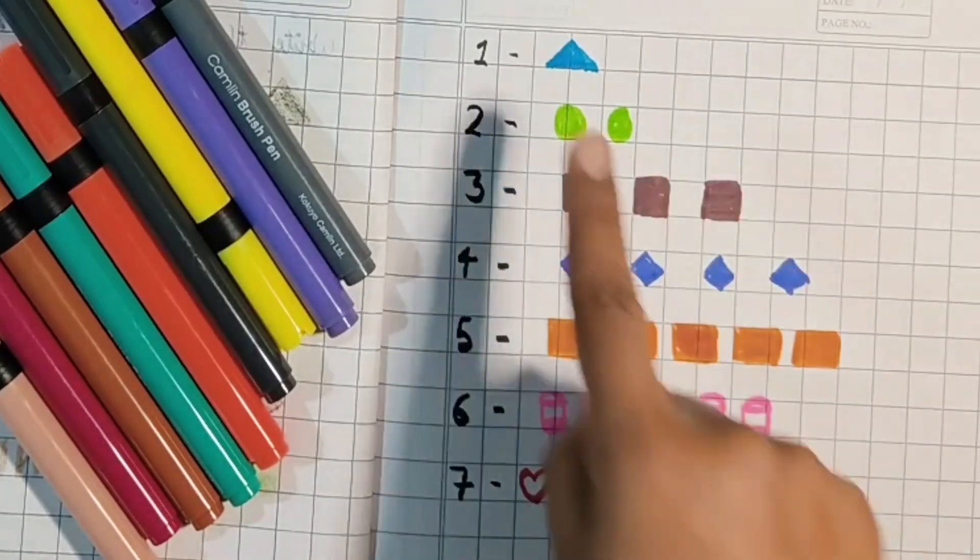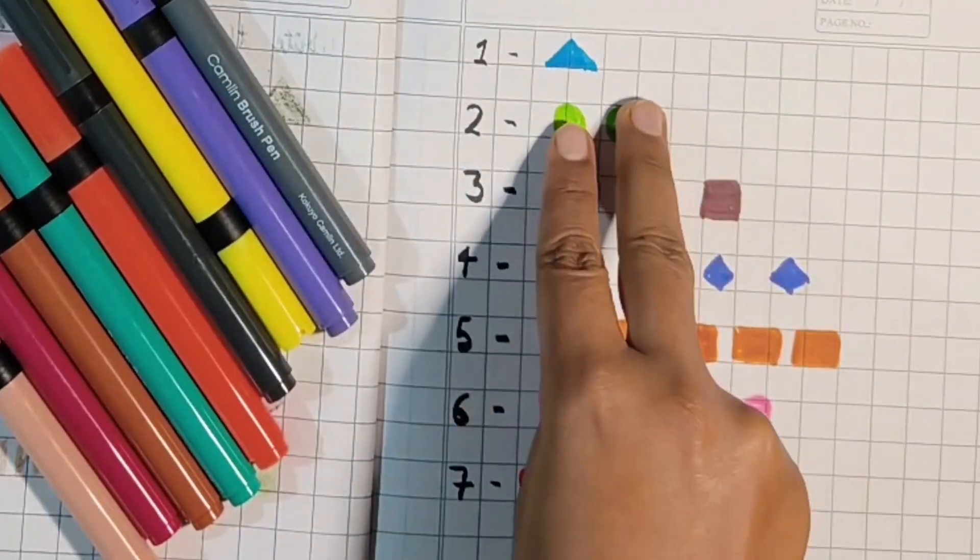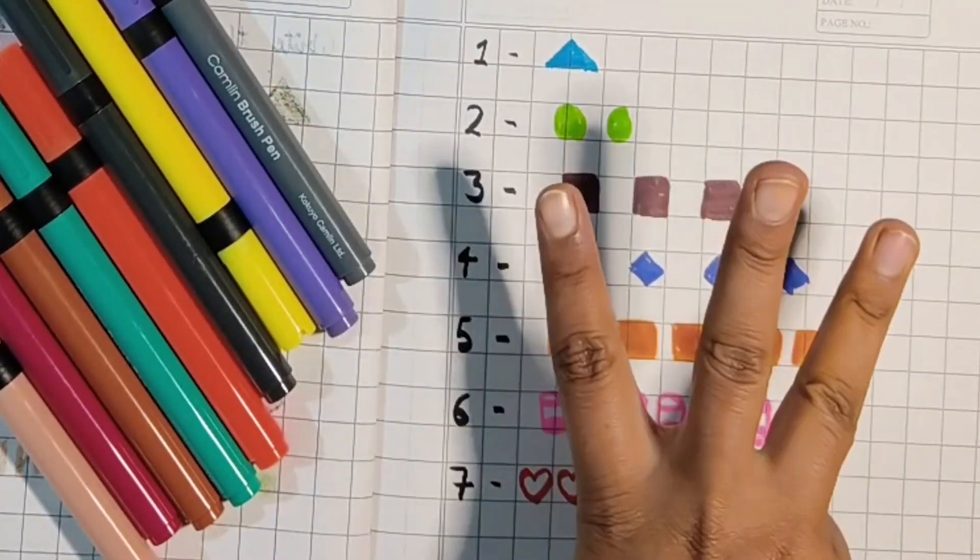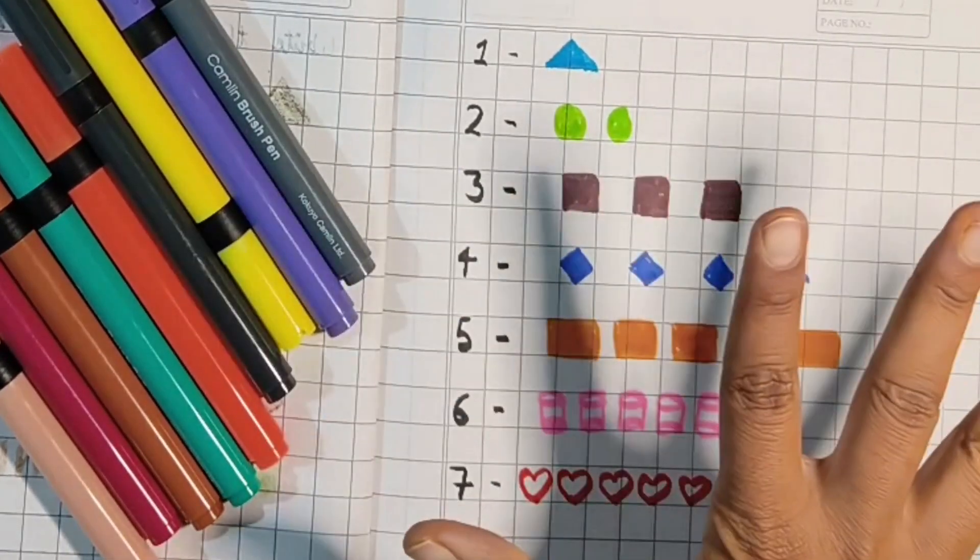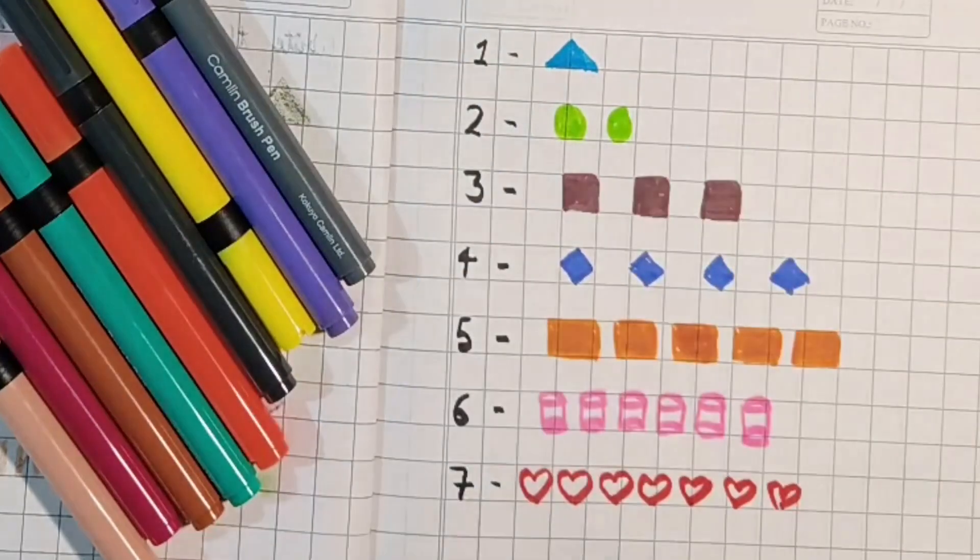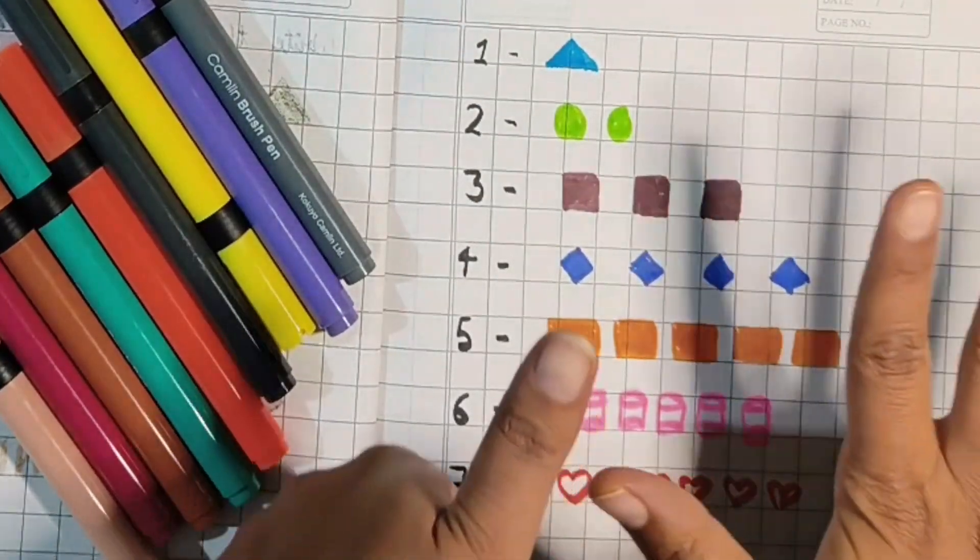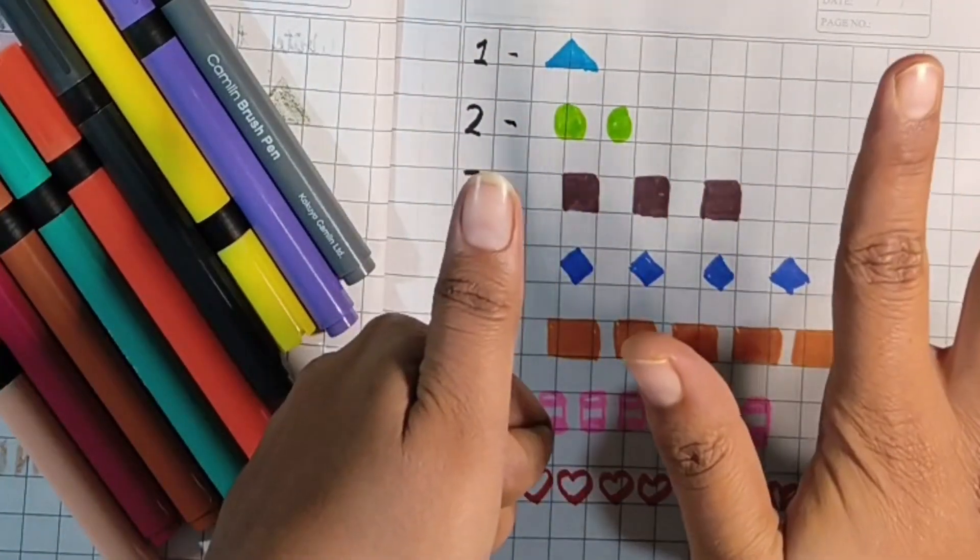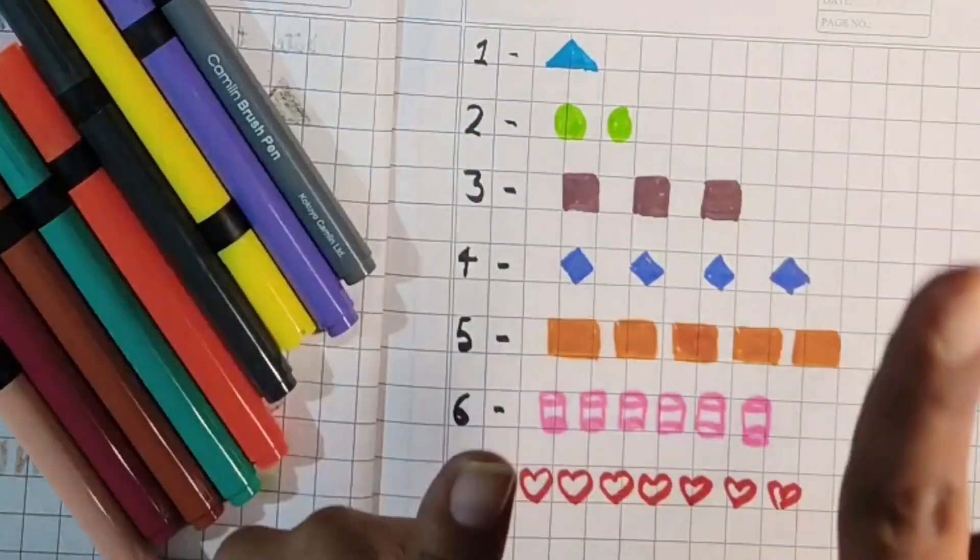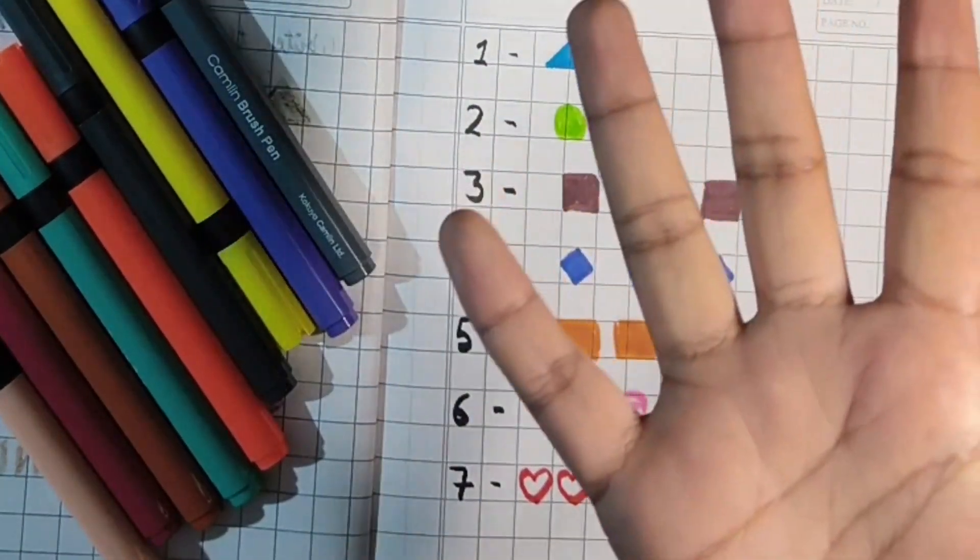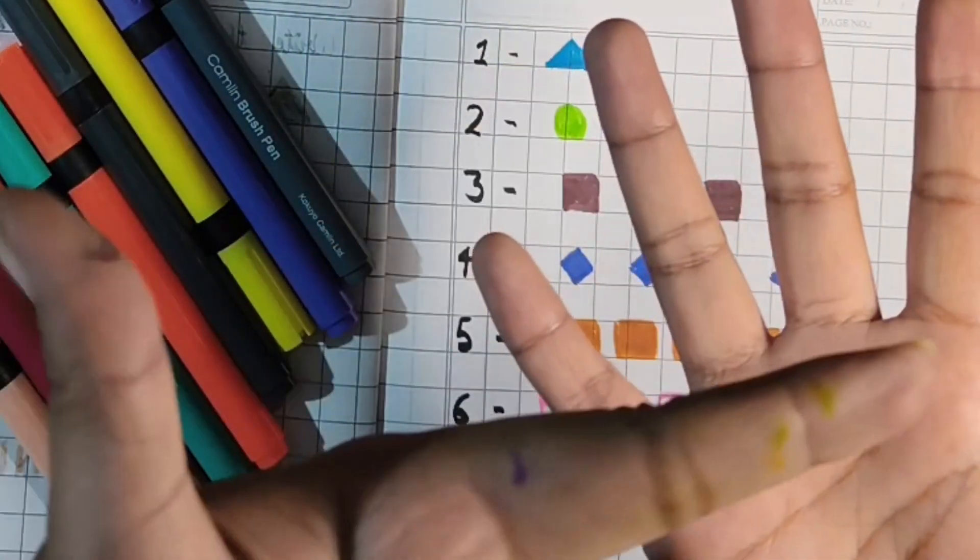So this is one, this is two, this is three, this is four, this is five, this is six. Let me count seven: one, two, three, four, five, six, seven.